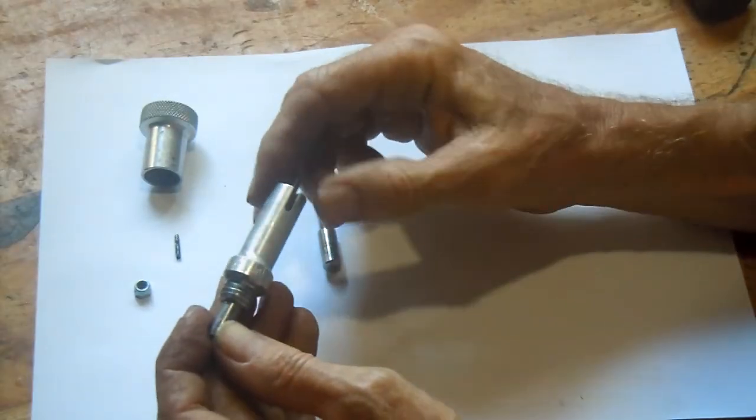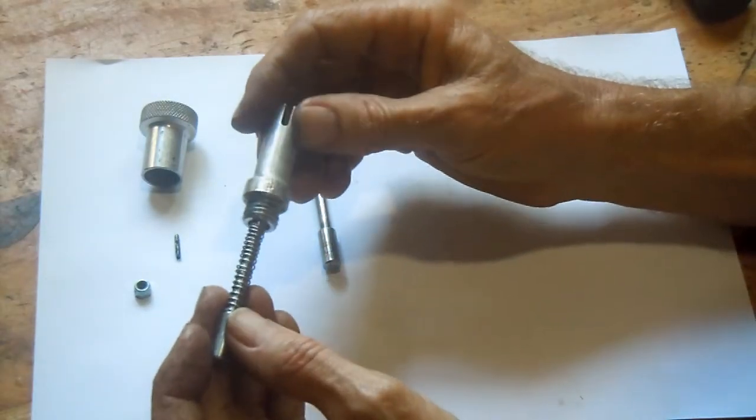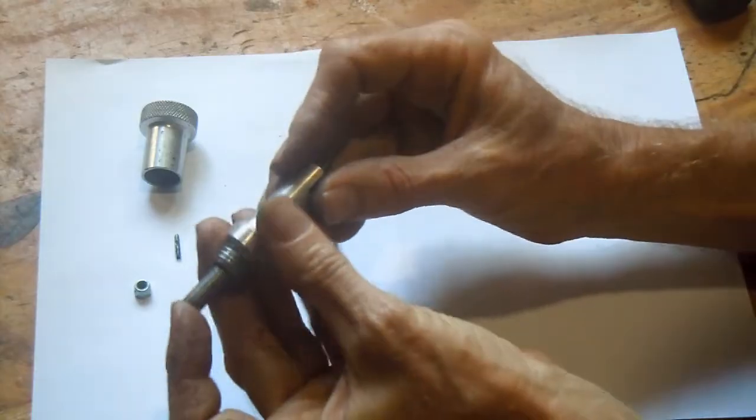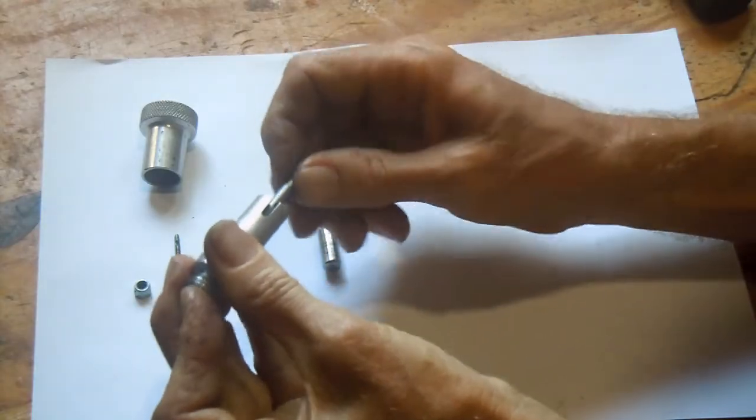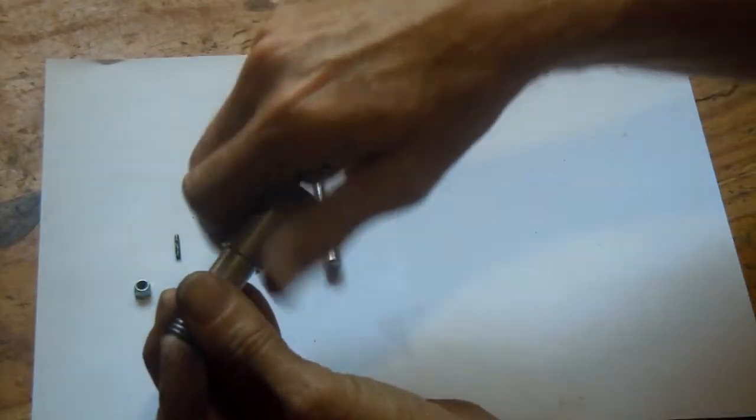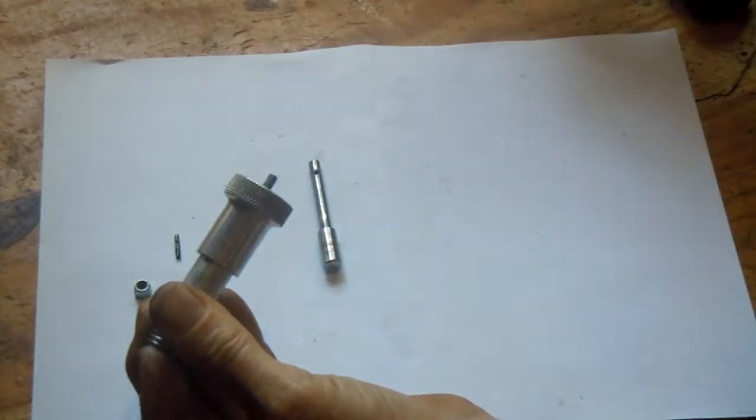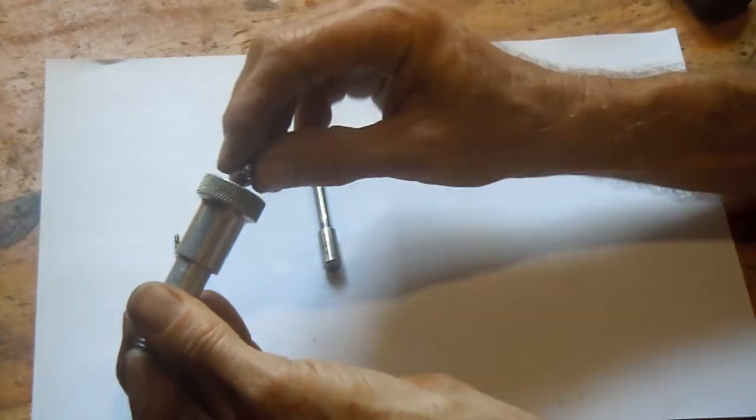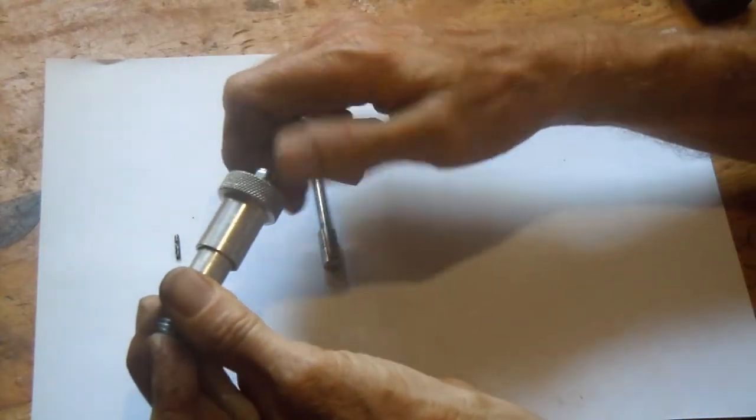So once the pin is in there one would then screw this part on. This is a handle to pull it on. And then once the handle is on there I put this lock nut on there.